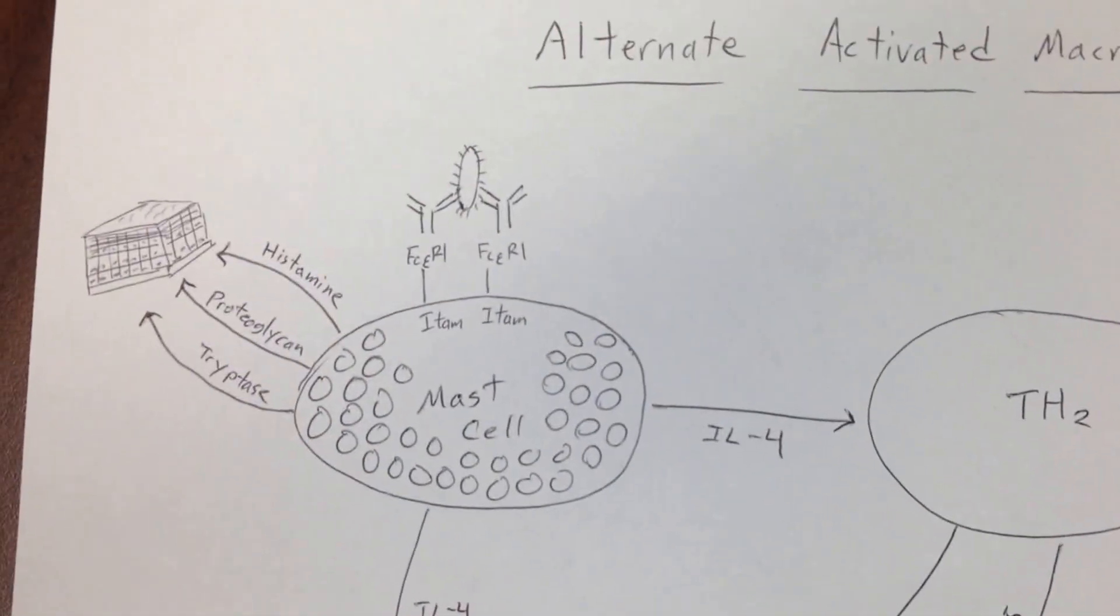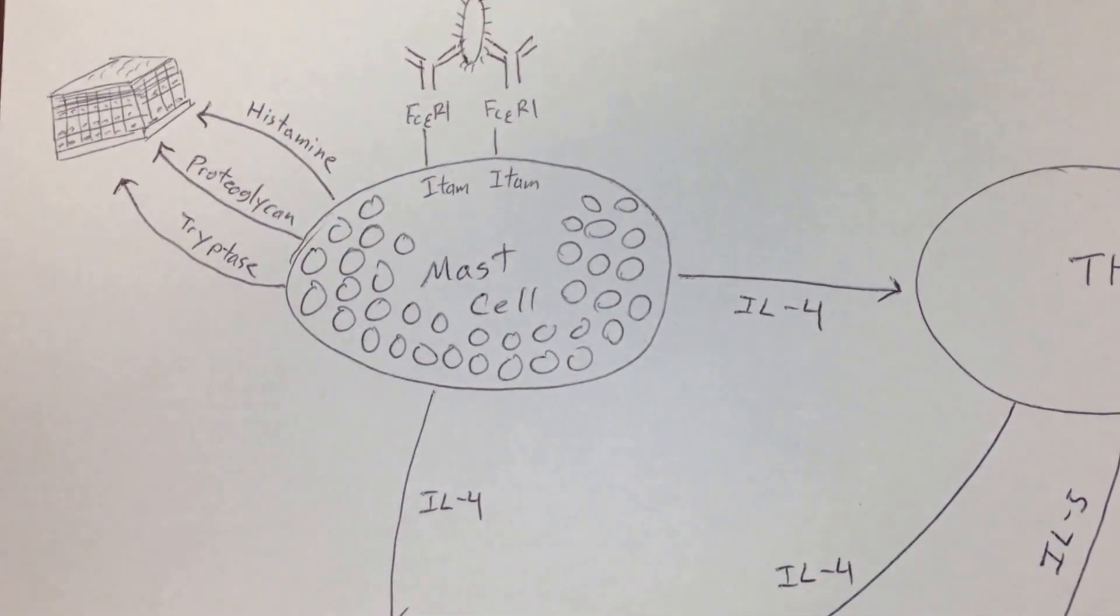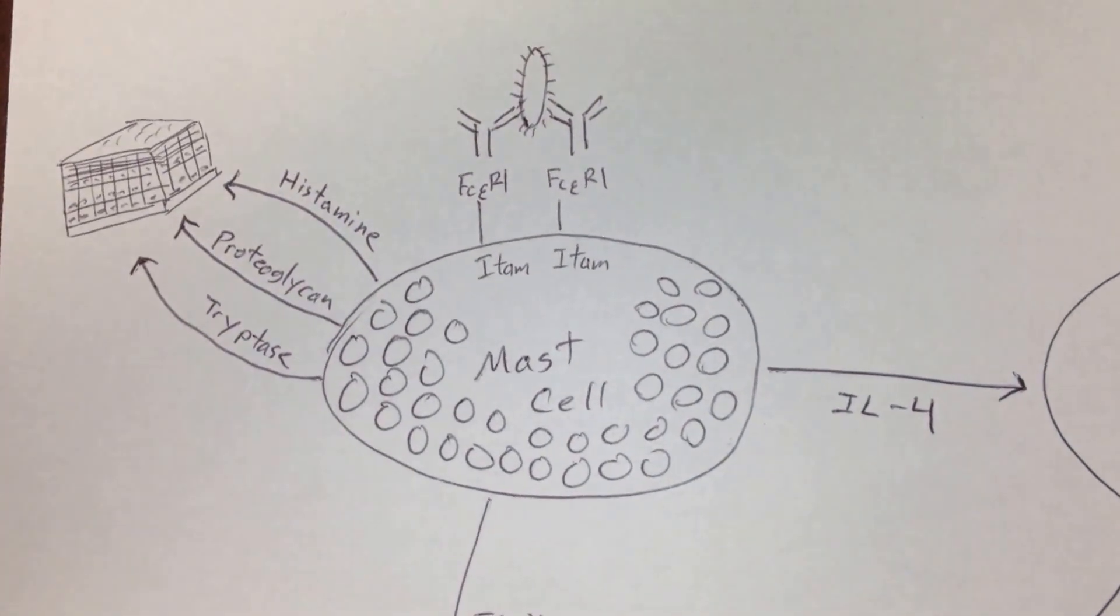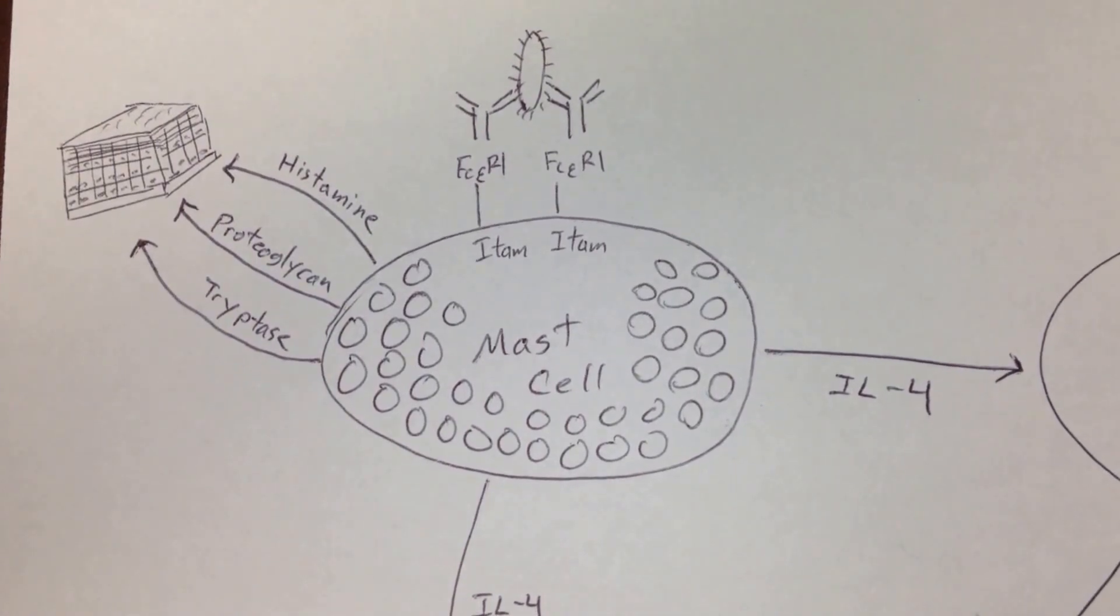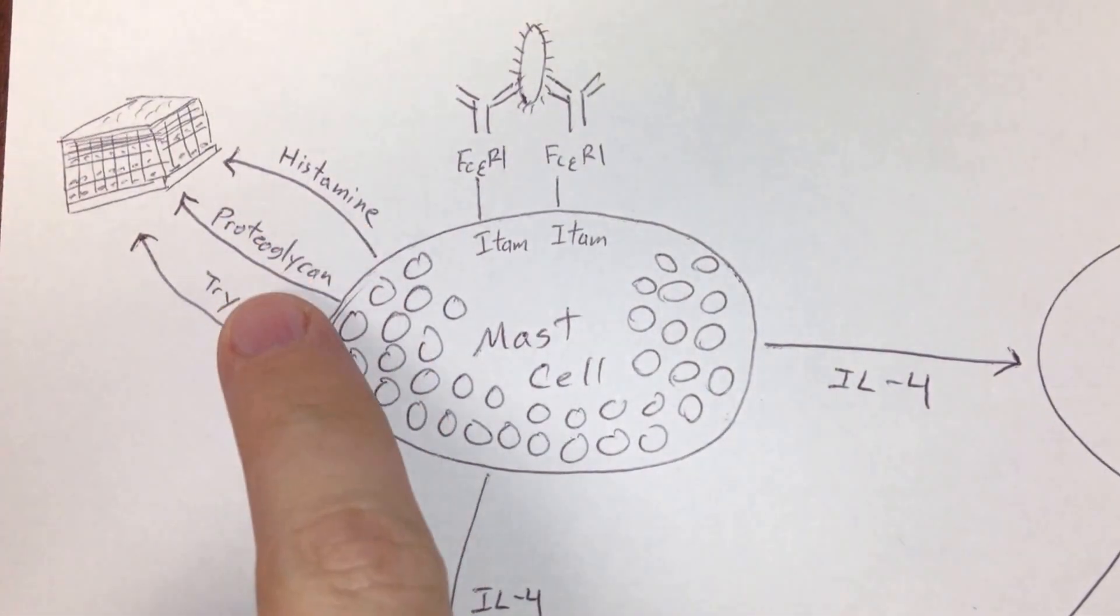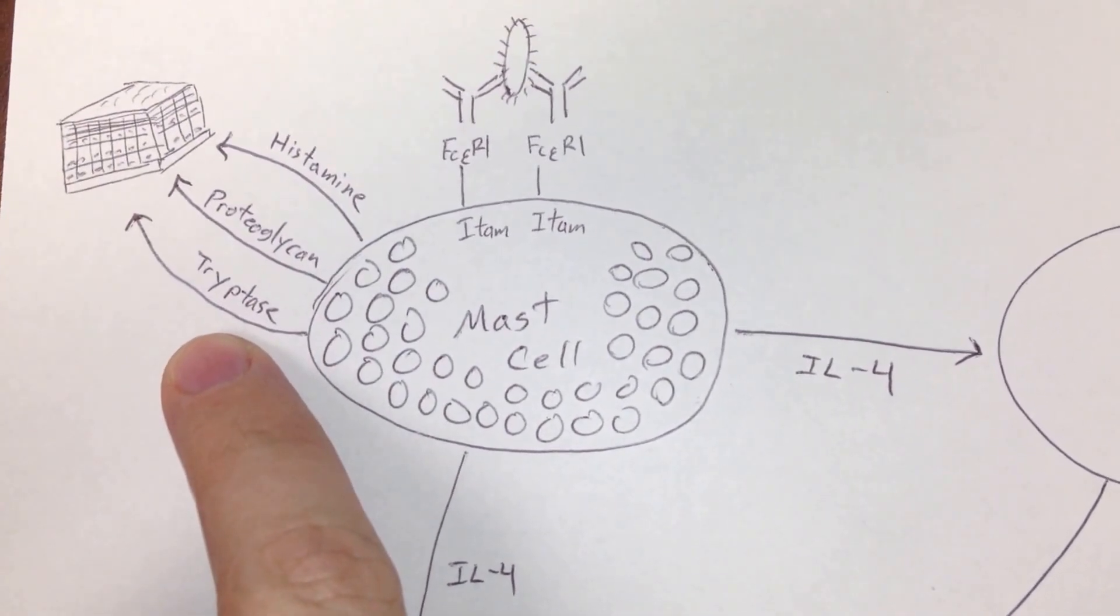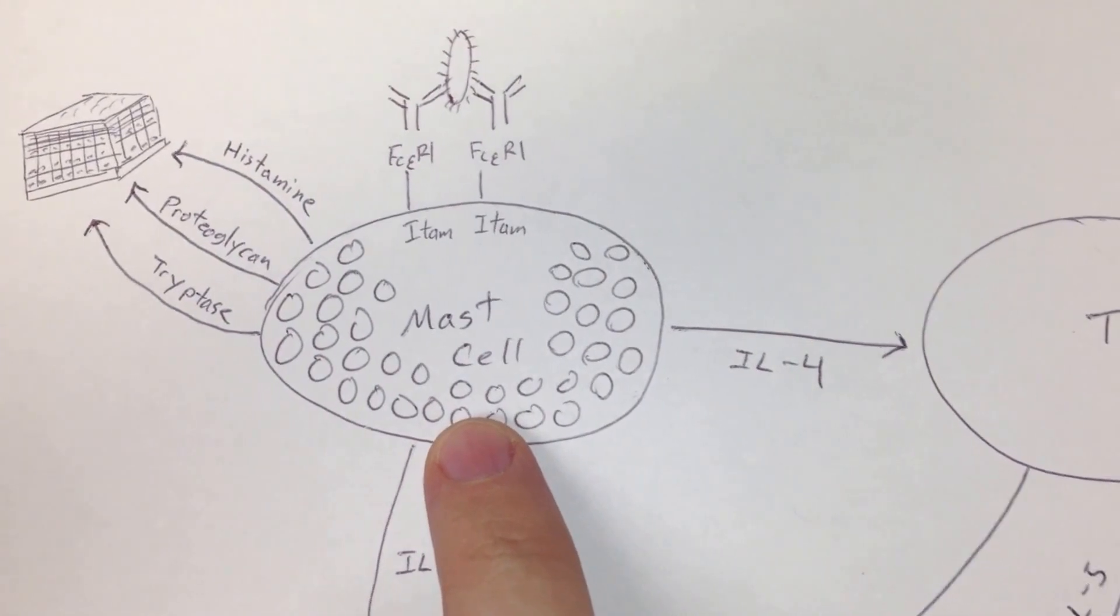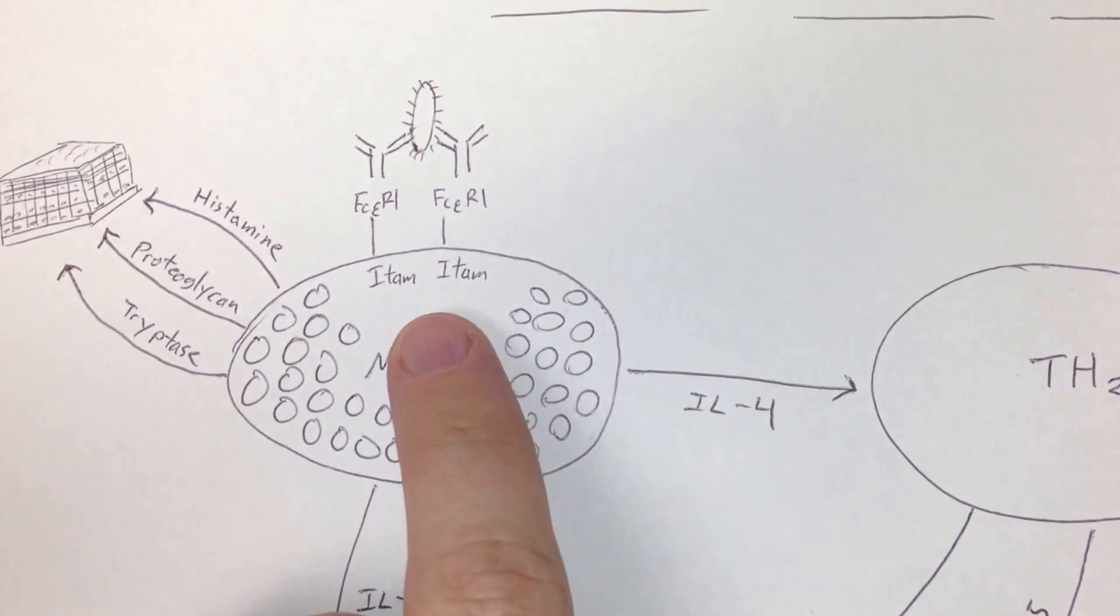We can also start with the macrophage's good friend up here, the mast cell. If we look at the mast cell, we can see there are a lot of little pockets in here that hold histamine. There are lots of ways to activate a mast cell. Apparently one of the easiest ways is to just scratch your arm and it will release histamine, proteoglycan, and tryptase, and that will all go to the tissue and cause the general response you're used to with histamines.